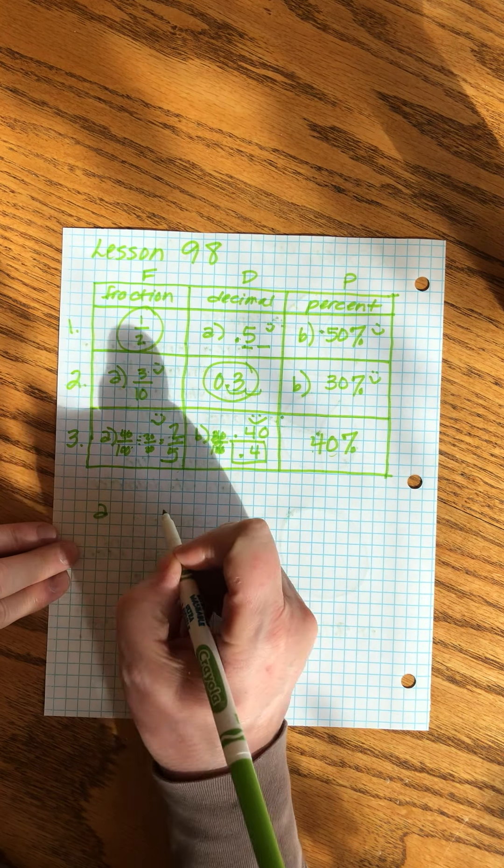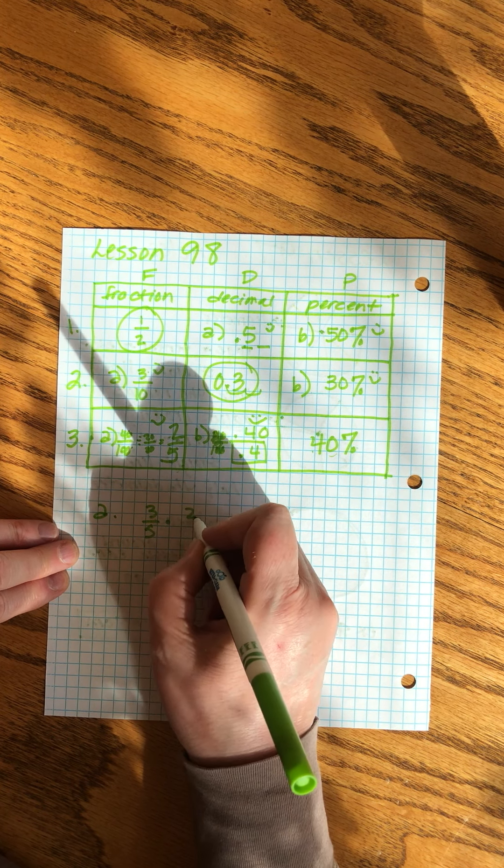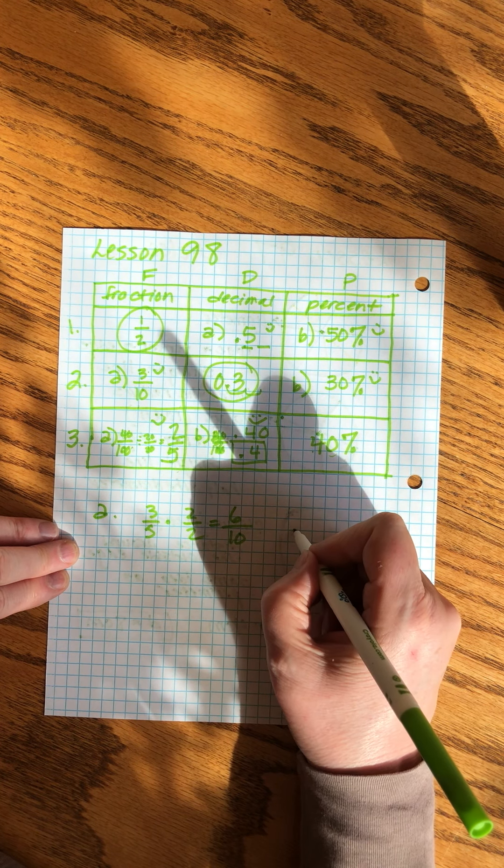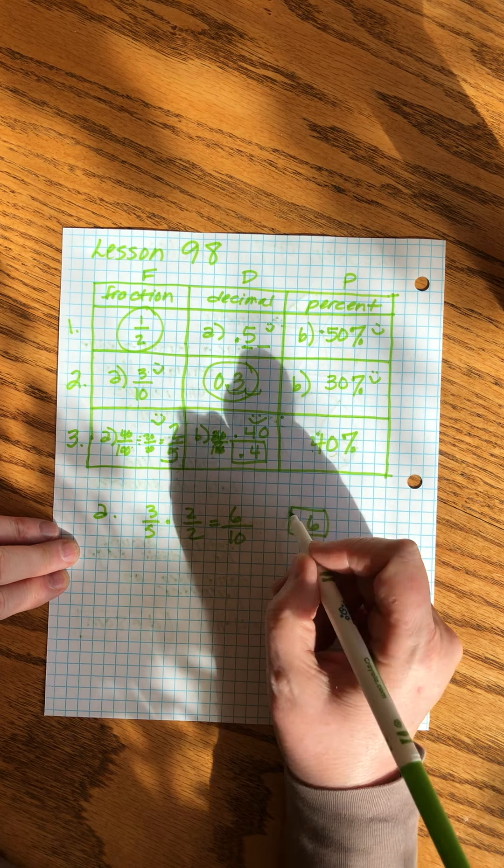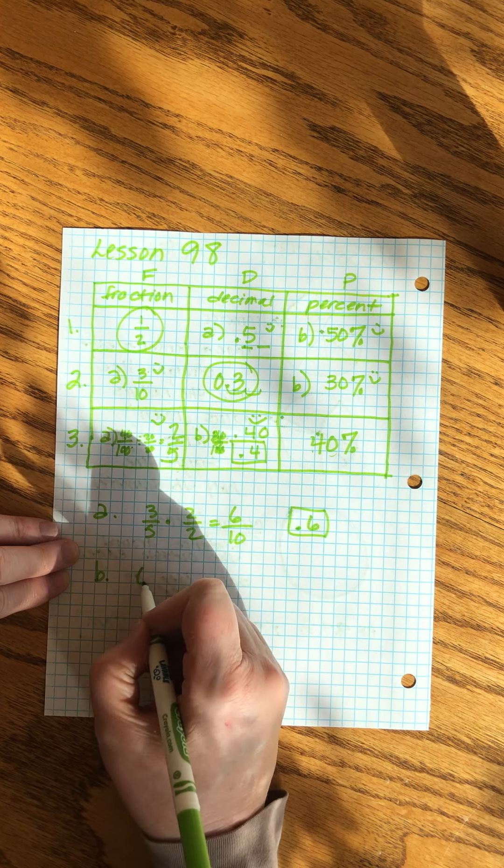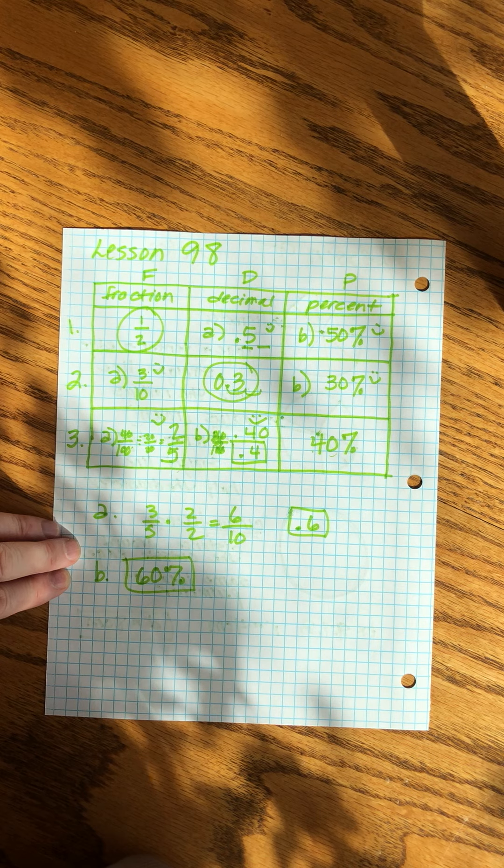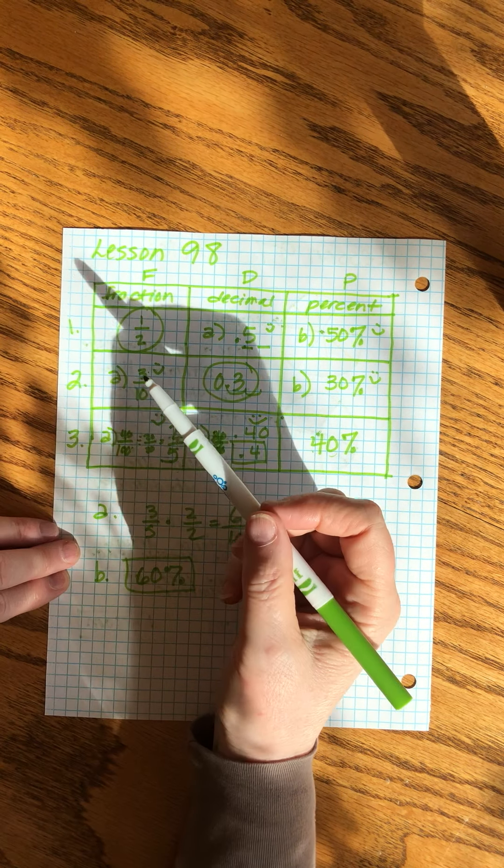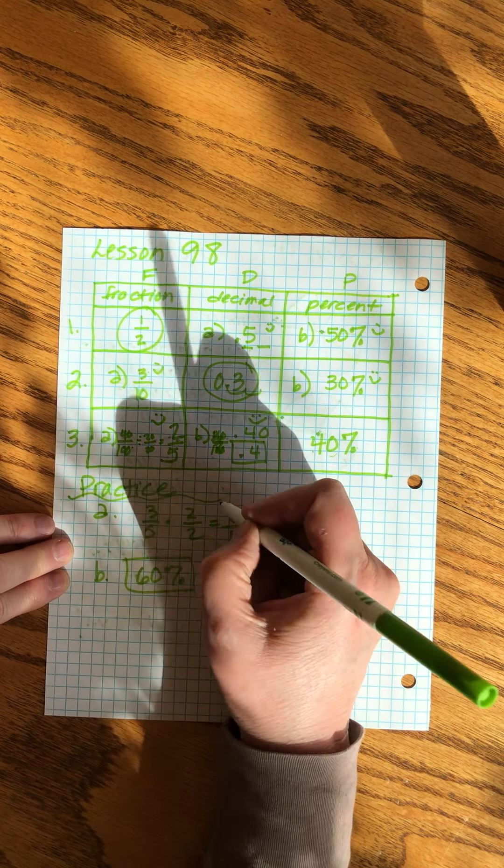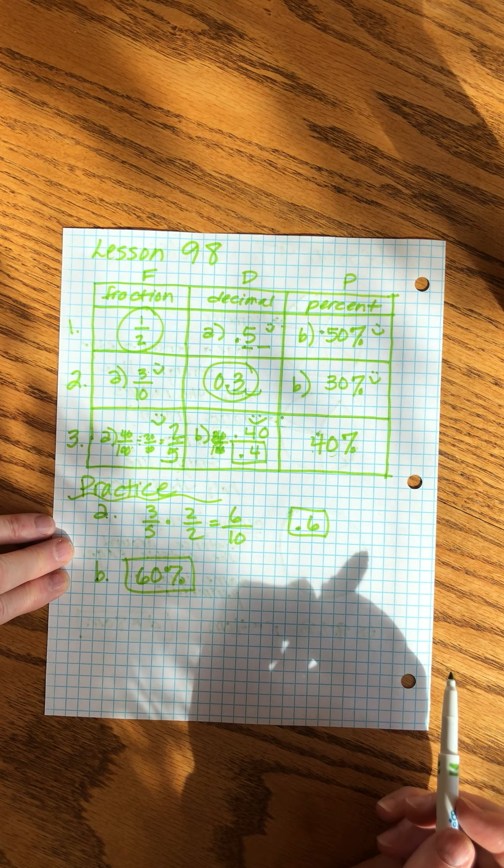For example this one, I wouldn't copy the table. I would do the decimal by writing point A, and then I would go three fifths times two over two equals six over ten, and then that would be 0.6. Then for B where I'm asked to find the percent I would just go sixty percent because I've already done the work here. So you don't have to copy the table in the practice. Just write down the letters and then do the work for each box.